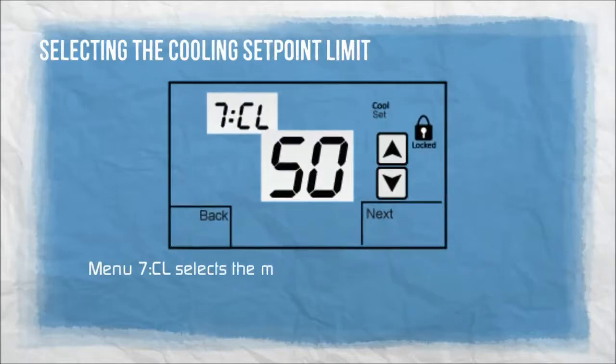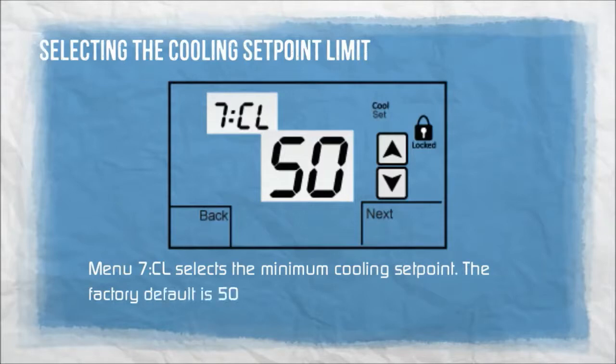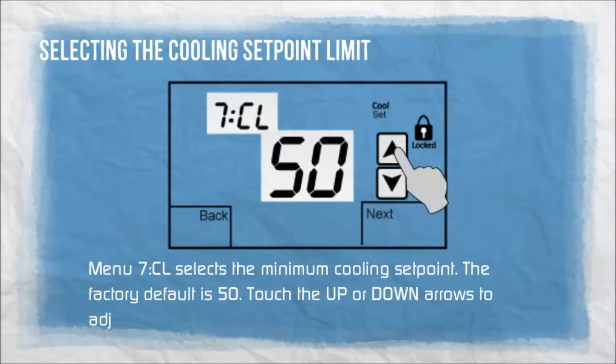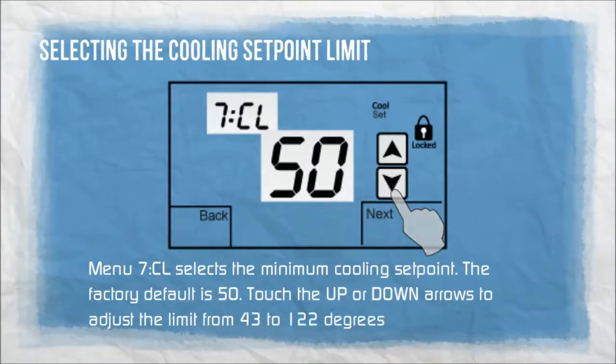Menu 7CL selects the minimum cooling set point. The factory default is 50. Touch the up or down arrows to adjust the limit from 43 to 122 degrees Fahrenheit.